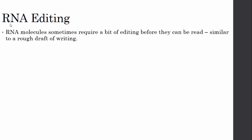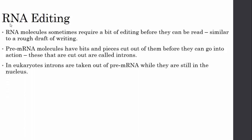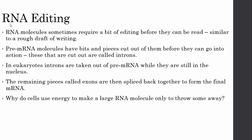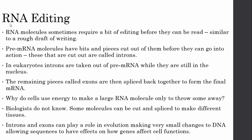RNA editing: RNA molecules sometimes require editing before they can be read, similar to a rough draft of writing. Pre-mRNA molecules have bits and pieces cut out of them before they can go into action — these pieces are called introns. In eukaryotes, introns are removed from pre-mRNA while still in the nucleus. The remaining pieces, called exons, are then spliced back together to form the final mRNA. Why do cells use energy to make a large RNA molecule only to discard some of it? Biologists don't know yet — but they do know some molecules can be cut and spliced to make different tissues, and introns and exons may play a role in evolution by allowing small DNA changes to affect how genes influence cell functions.